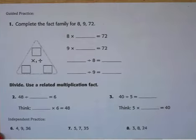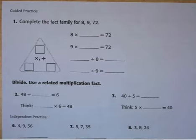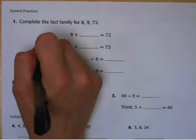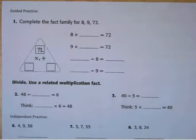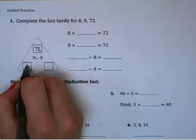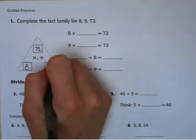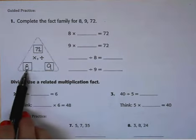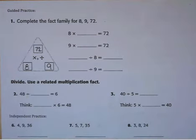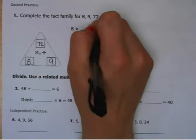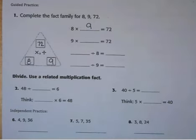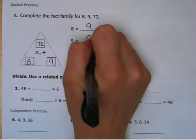Moving on to guided practice for this lesson. For the first guided practice problem, we are going to complete the fact family of 8, 9, and 72. So we would put 72 at the top of our fact family. And then at the bottom, we know that 8 times 9 equals 72. I like to list these in order from least to greatest down at the bottom.